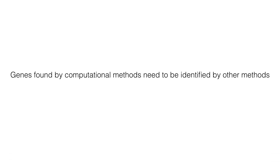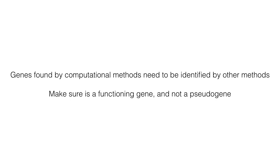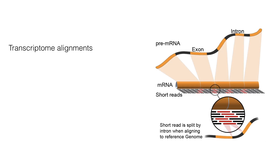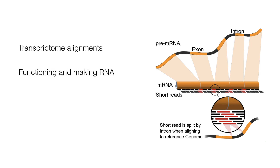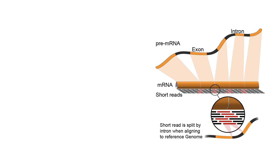Any gene found by computational method needs to be identified by other methods to make sure it is really a functional gene and not a pseudogene. This kind of evidence can come from transcriptome alignments — the existence of an RNA transcript that aligns to a gene in your genome means that the gene is in fact functioning and making RNA.